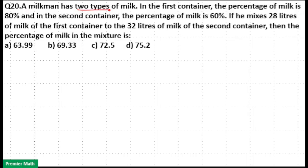A milkman has two types of milk. In the first container, the percentage of milk is 80% and in the second container the percentage of milk is 60%. If he mixes 28 liters of milk from the first container and 32 liters from the second container, what is the percentage of milk in the mixture?